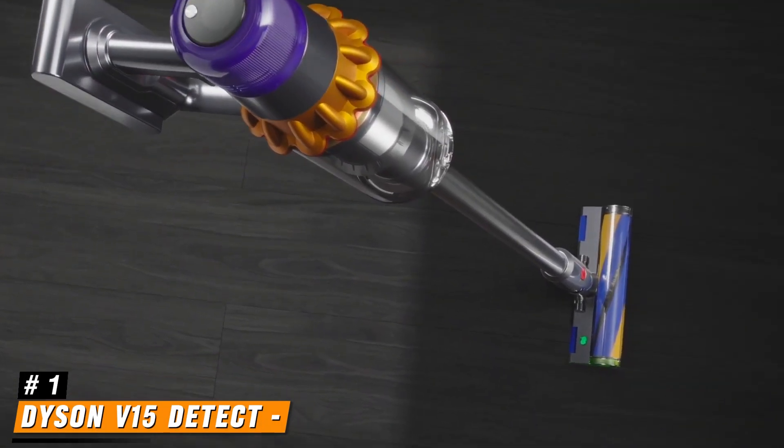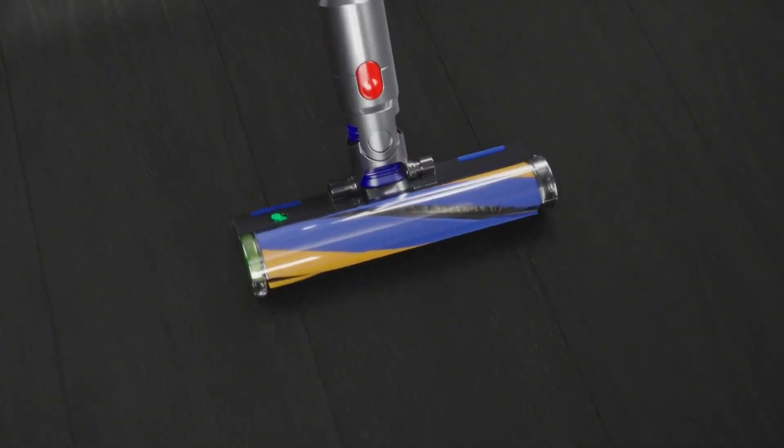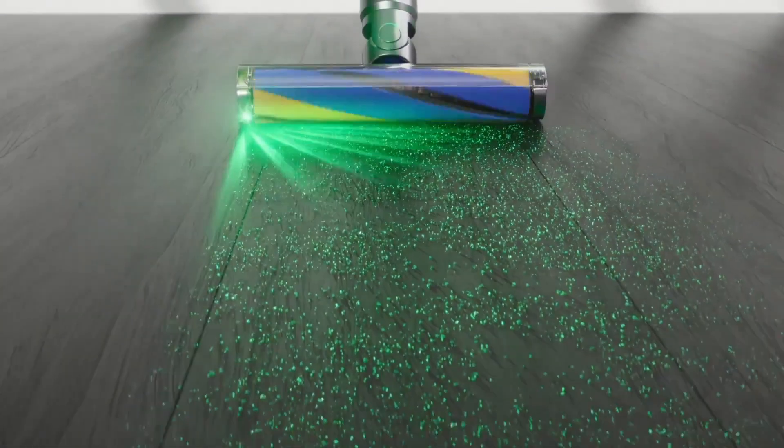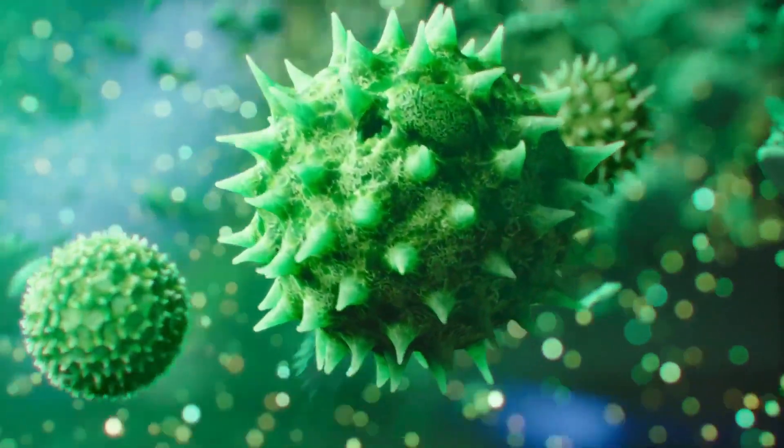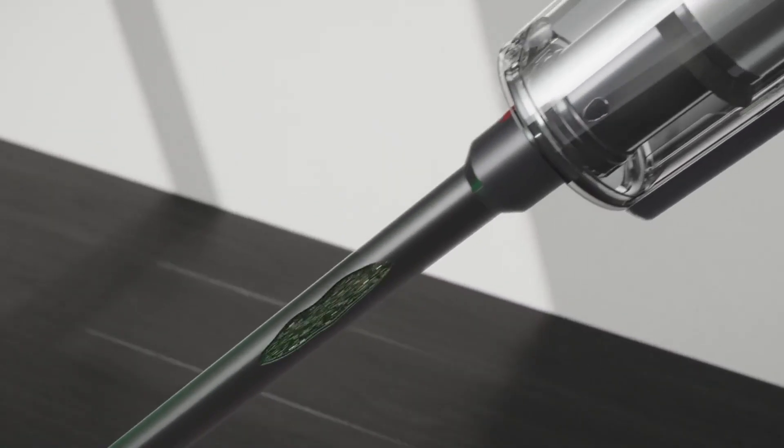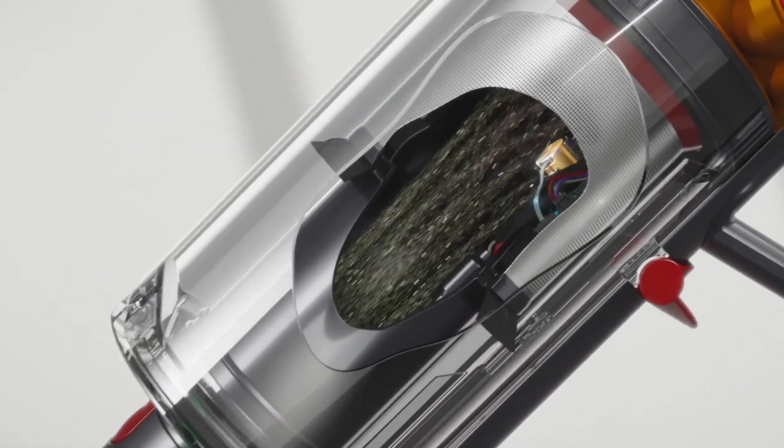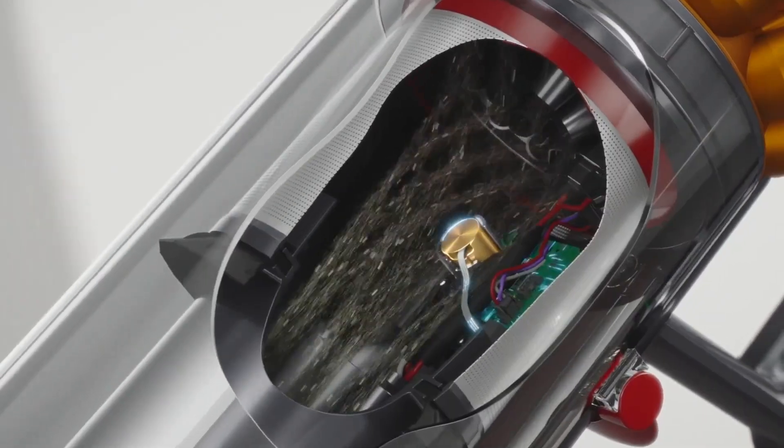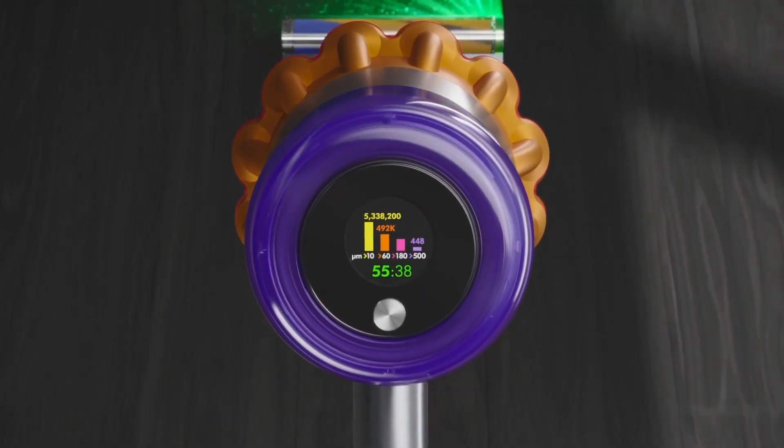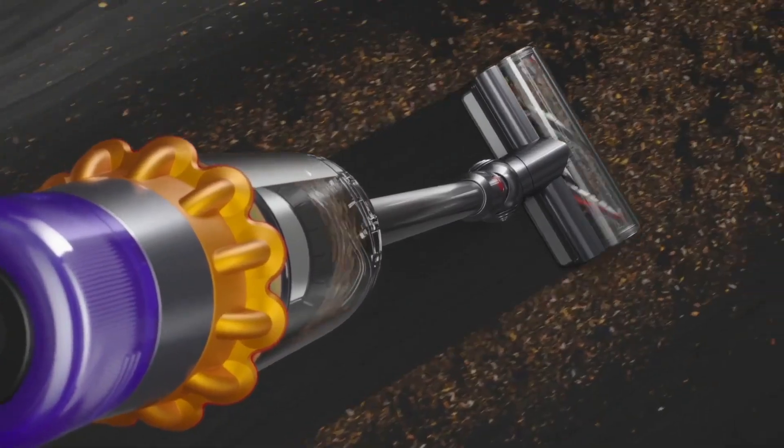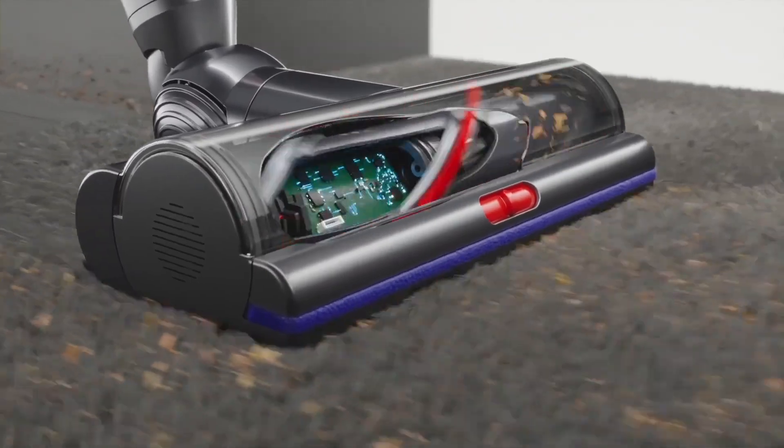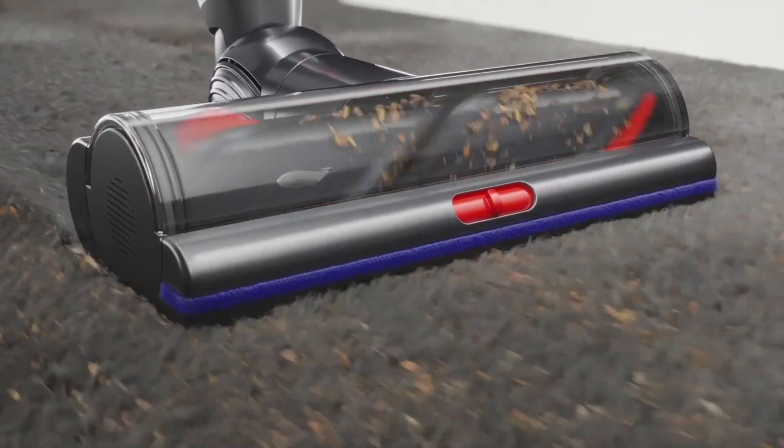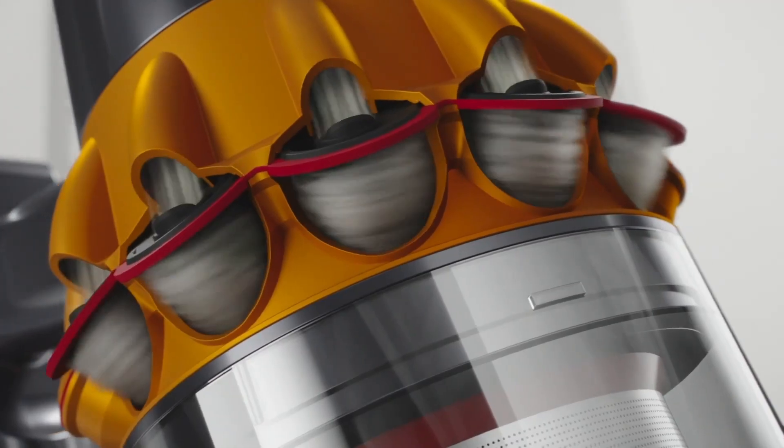Number 1. Dyson V15 Detect. The Dyson V15 Detect is a state-of-the-art cordless vacuum cleaner that has redefined home cleaning with its advanced technology and innovative features. Equipped with a powerful motor, the V15 Detect delivers exceptional suction power, effortlessly capturing microscopic dust and larger debris from various surfaces. One of its standout features is the unique laser dust detection technology, which illuminates hidden dust and debris on hard floors, ensuring that no speck of dirt is left behind. This makes cleaning not only more effective, but also visually satisfying, as the laser highlights areas that require attention.